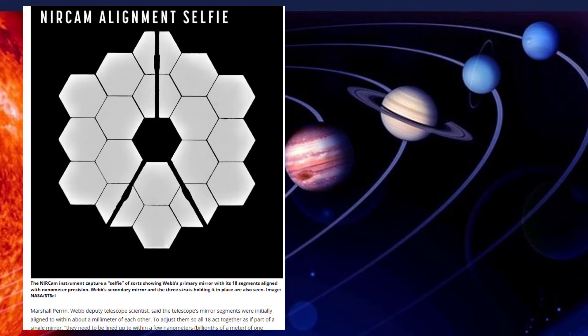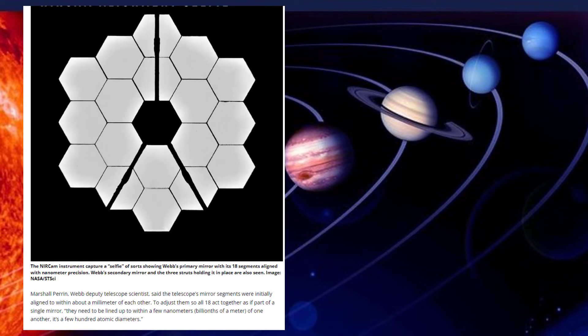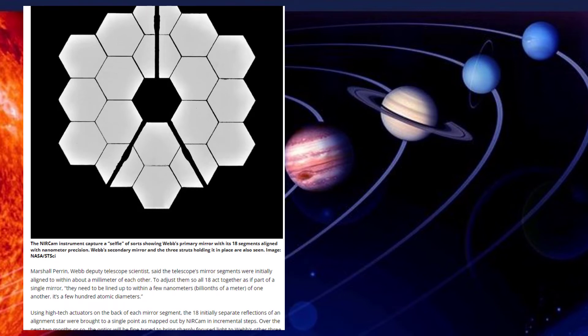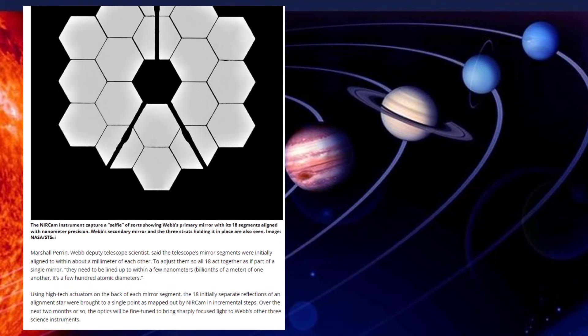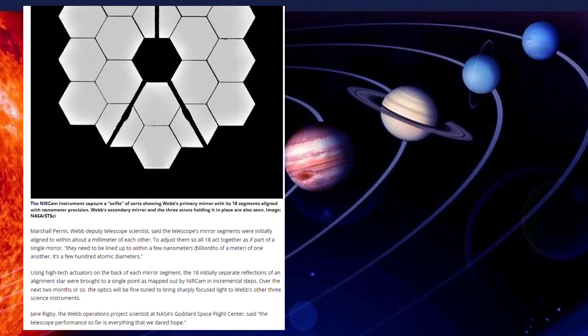Using high-tech actuators on the back of each mirror segment, the 18 initially separate reflections of an alignment star were brought to a single point as mapped out by NIRCam in incremental steps. Over the next two months or so, the optics will be fine-tuned to bring sharply focused light to Webb's other three science instruments.